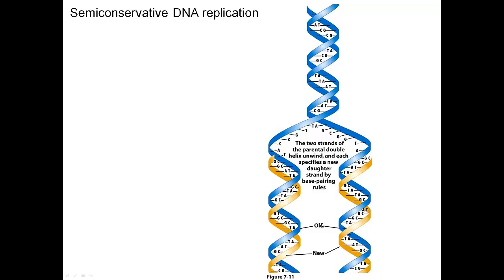This video is an overview of DNA replication. DNA replication occurs via a semi-conservative mechanism. The double-stranded DNA helix, shown in blue, has its two strands separate from each other. The base pairs come apart at their hydrogen bonds, and each of those strands then codes for a new strand of DNA. The new strand is shown in yellow.